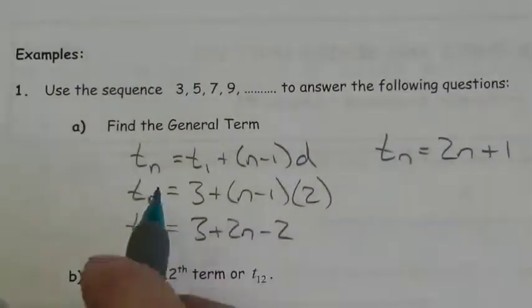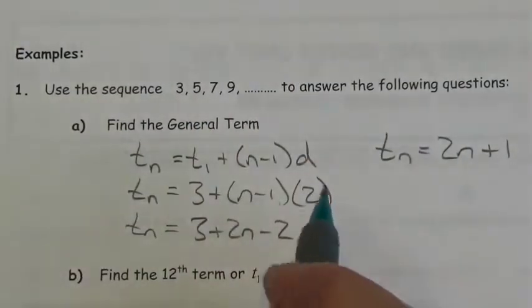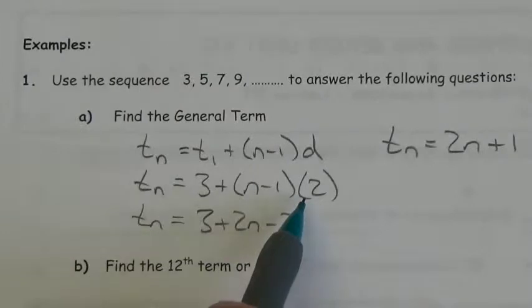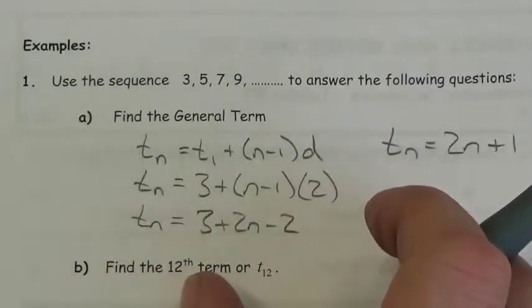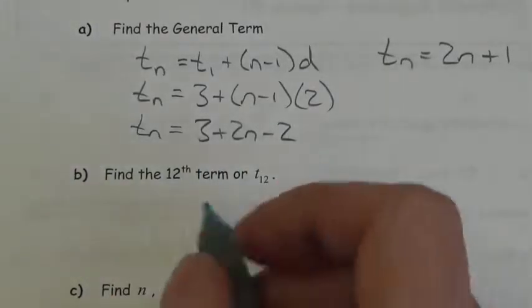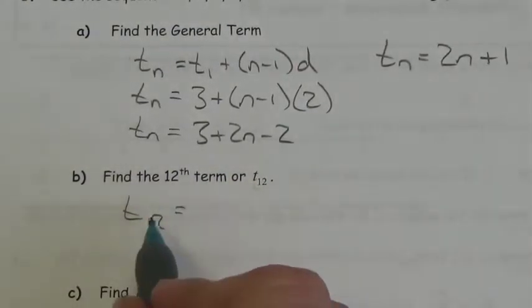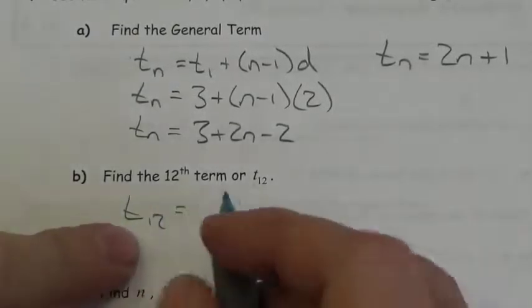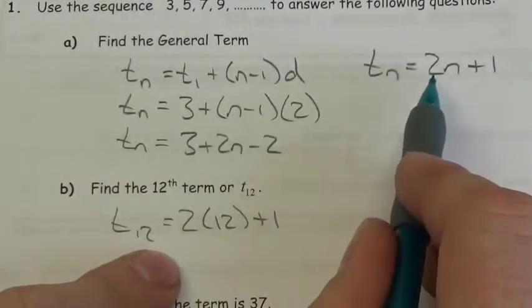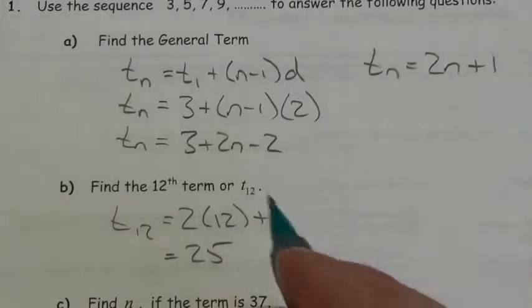All I need to give you to build the entire sequence is the first term and the common difference. You can find any term in the sequence from those two pieces. Now, find the 12th term. As soon as I say that, 12 becomes the subscript and takes the place of N in the formula. So T₁₂ equals 2 times 12 plus 1 — that's 24 plus 1 — equals 25. The 12th term of this sequence is 25.